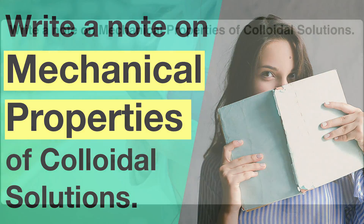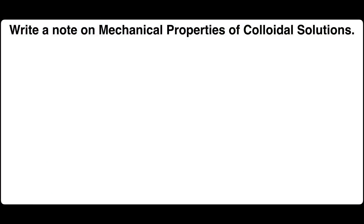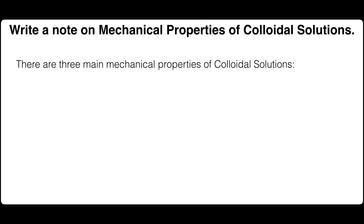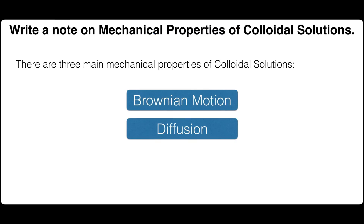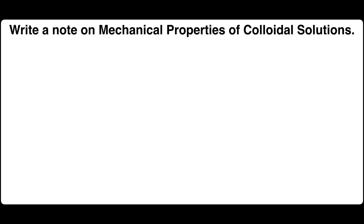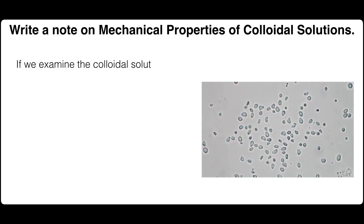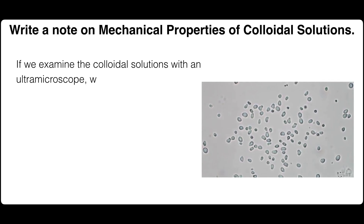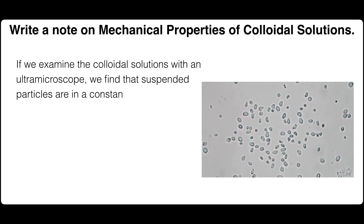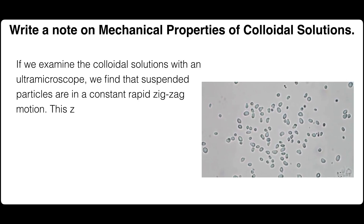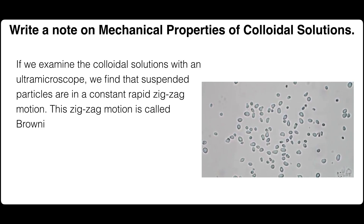Explain the mechanical properties of colloidal solutions. If we examine the colloidal solution with an ultra microscope, we find that suspended particles are in a constant rapid zigzag motion. This zigzag motion is called Brownian movement.